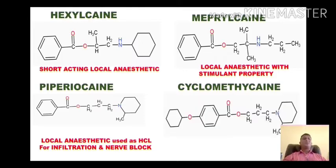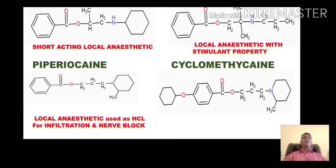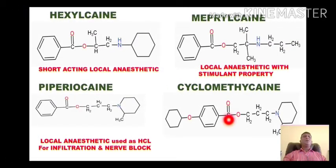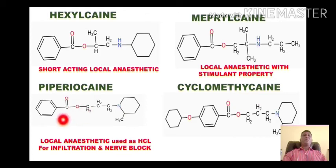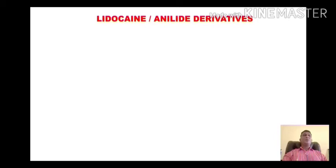If we look at the structures of cyclomethycaine and piperocaine, we find structural similarity. Both drugs share the same core structure; the only difference is that cyclomethycaine has a cyclohexyloxy group attached on the benzene ring at the para position, which is absent in piperocaine. Cyclomethycaine is a rarely used local anesthetic agent.